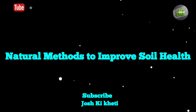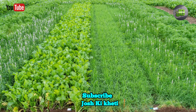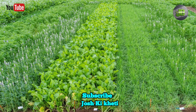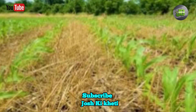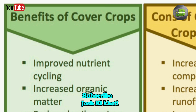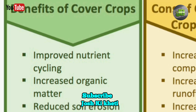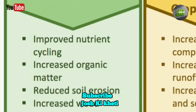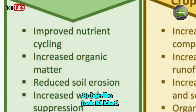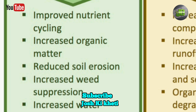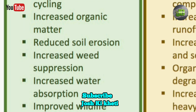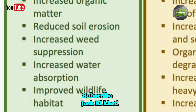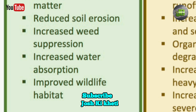Natural methods to improve soil health. Cover crops, such as clover, rye, and legumes, are grown to protect and enrich the soil. Benefits include: reducing soil erosion, enhancing soil organic matter, fixing nitrogen in the soil (legumes), and suppressing weeds.